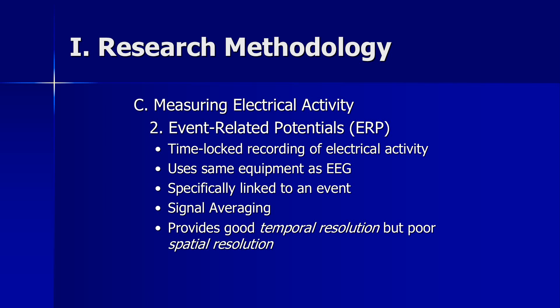Trying to figure out where in 3D space these signals are coming from is pretty difficult, though researchers are getting better at it. Often they'll combine event-related potentials with functional magnetic resonance imaging to get a good combination of the two.